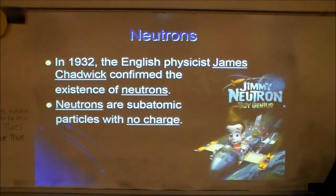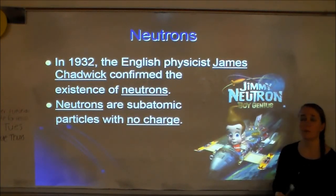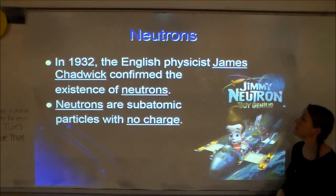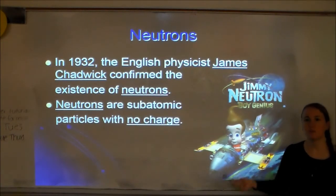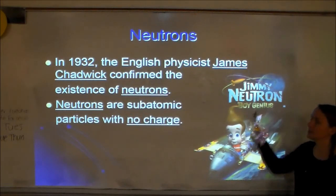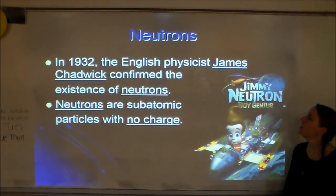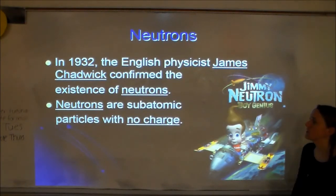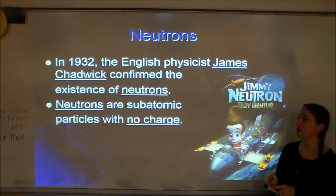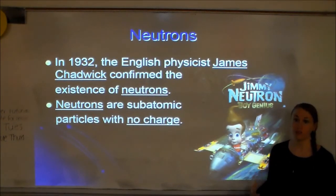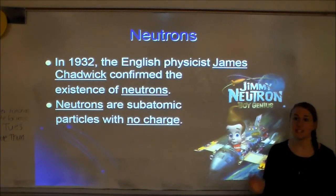James Chadwick confirmed the existence of neutrons — subatomic particles with no charge. A way to remember this: the nickname for James is Jimmy, as in Jimmy Neutron. So J.J. Thompson discovered electrons, Eugene Goldstein discovered protons, and James Chadwick discovered neutrons. Make sure you know those names — dates and where they're from are not important, just the names.